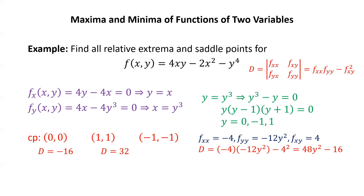For (1,1) and (−1,−1), since we're squaring y, both give y² = 1, so D equals 48 minus 16, which is 32. And fxx is always −4. Since D was negative for the critical point (0,0), at (0,0) we have a saddle point — meaning there are two different traces through (0,0), one with a minimum and one with a maximum.